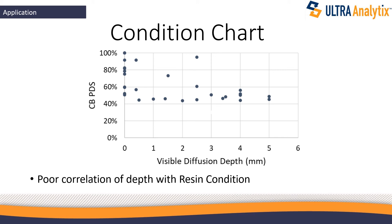We also wanted to know: does the condition of the lining relate to the depth of diffusion? What we found is it doesn't. There's a very poor correlation of depth with resin condition. Most of the time the resin is in worse condition than you really want to know. We've got one case where we have a two-and-a-half millimeter depth of diffusion and it's like brand-new resin — it could very well be that the chemical involved is almost meaningless. But we know that we can see two and a half millimeters of damage in it.